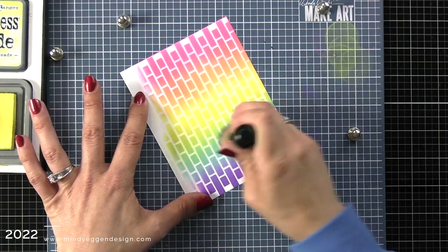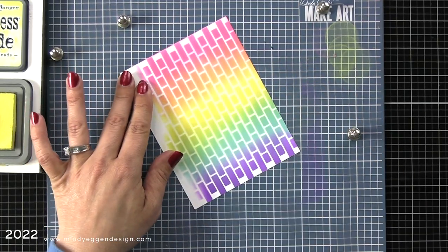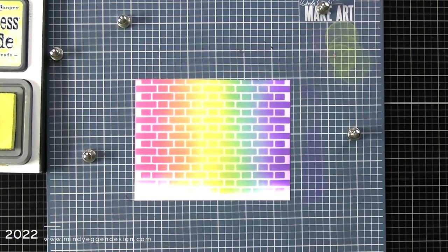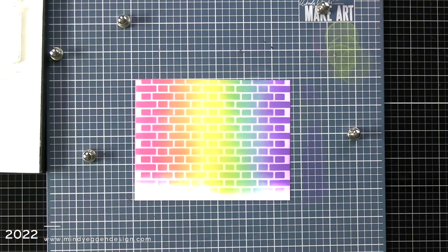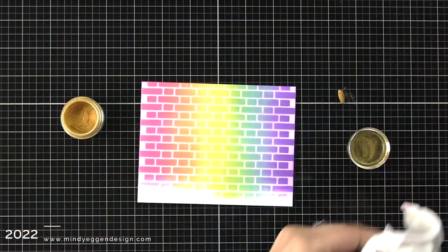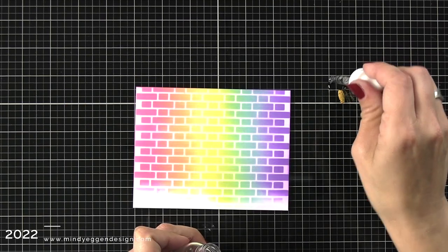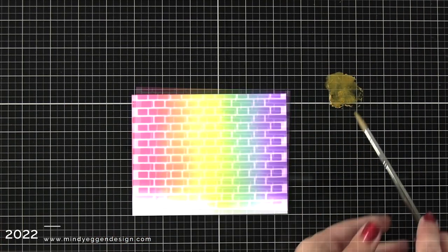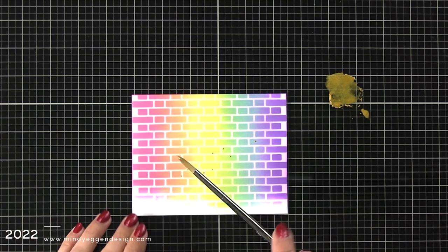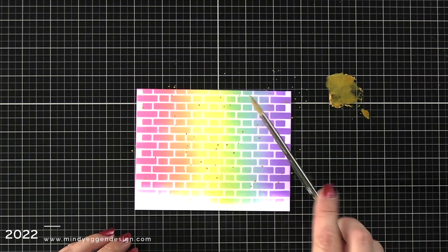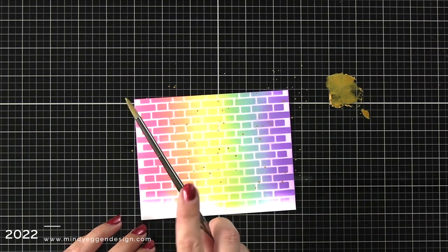Now after I have this done, I thought it would be really fun to add some splatters to the background. You could add different colors of splatters, but I decided to go for a gold splatter. I'm bringing out the perfect pearls in gold, and I'm just using this little spoon to put some on my work surface. I'm adding a couple drops of water, and then I'm going to mix that up with a paintbrush and flick this all over the background. I just love that splattered look. It kind of adds to that artsy feel that we have going on for the card.